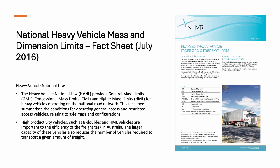National Heavy Vehicle Mass and Dimension Limits fact sheet, July 2016. The Heavy Vehicle National Law (HVNL) provides General Mass Limits (GML), Concessional Mass Limits (CML), and Higher Mass Limits (HML) for heavy vehicles operating on the national road network. This fact sheet summarizes the conditions for operating general access and restricted access vehicles relating to axle mass and configurations.